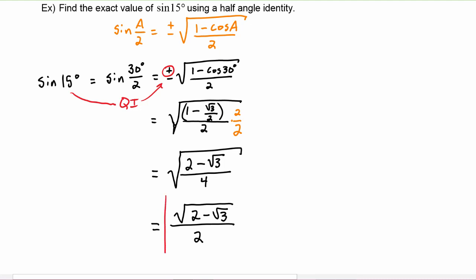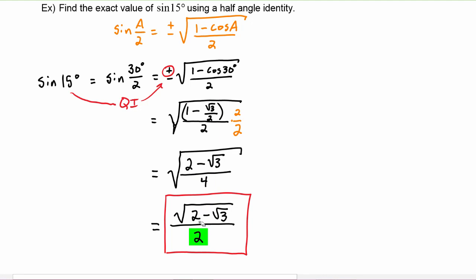This is the simplest form of the answer for sine of 15 degrees. Notice that it's okay to have a radical underneath another radical — we just can't have a radical in the denominator. That was made easy here because we had radical four in the denominator, which became two.